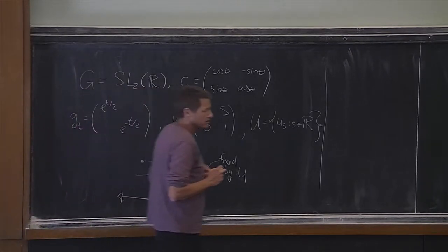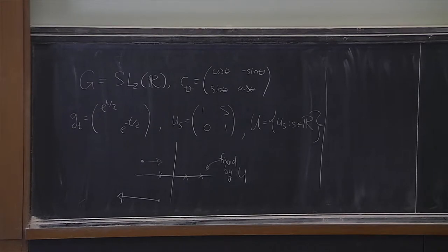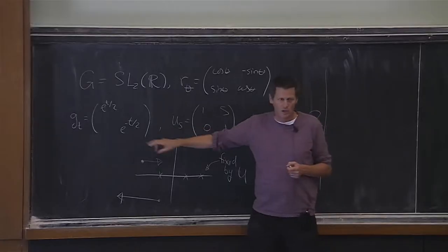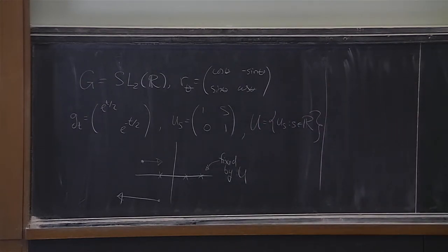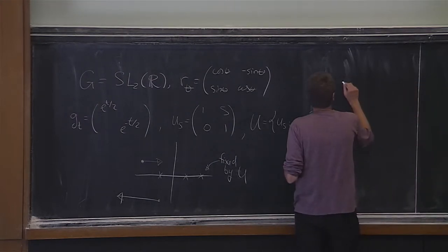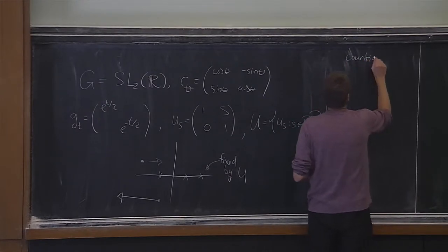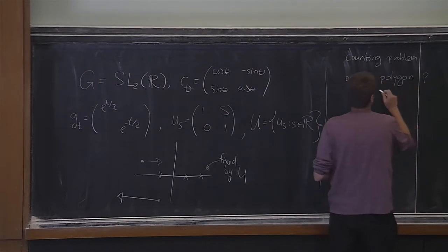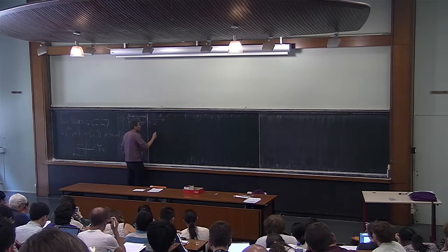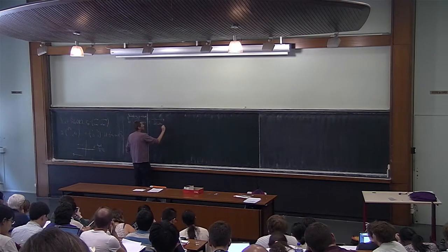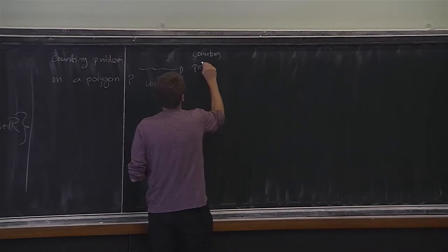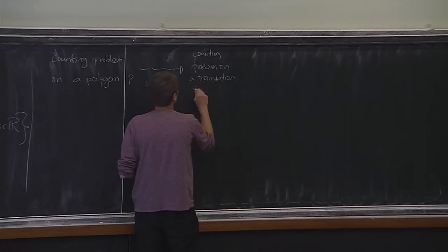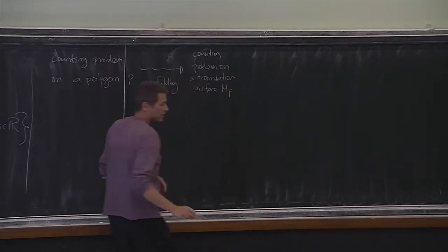Let me recall the ending of John's lecture from yesterday and tell you why it connects to the horocycle flow. John didn't mention the horocycle flow, but he did mention two flows. Using those two flows he transformed a counting problem into a dynamical problem. In his talk, a counting problem on a polygon P got converted using unfolding to another counting problem on a translation surface M_P, which depends on P.